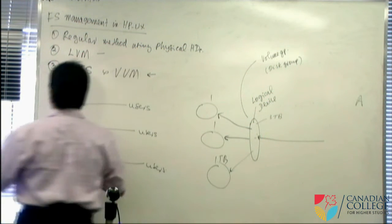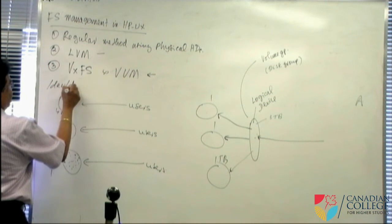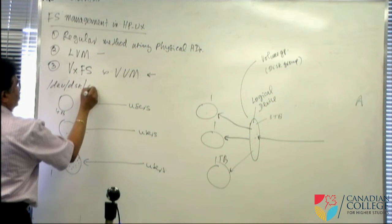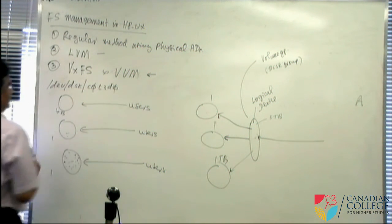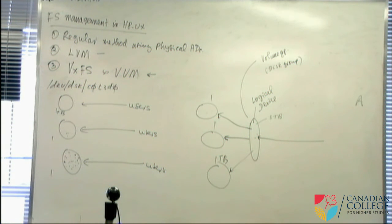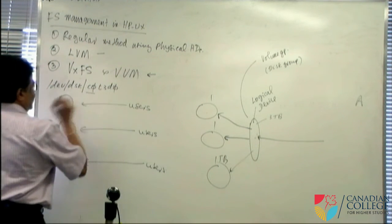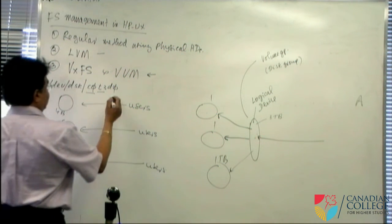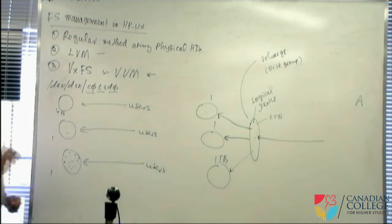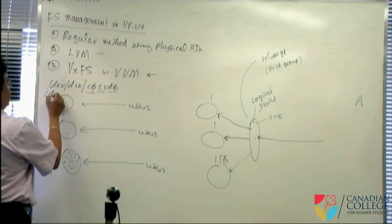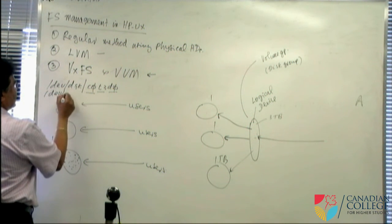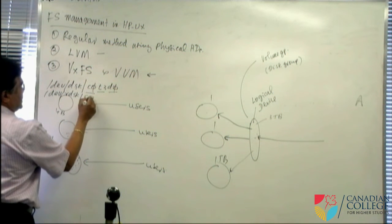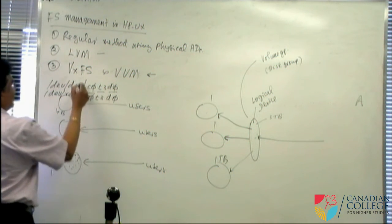Physical hard drives have device names like /dev/dsk/c0t3d0 for block devices, or /dev/rdsk/c0t3d0 for raw devices. In this naming, C0 means controller zero, T3 means target three in SCSI, and D0 is the first disk. Users access these devices directly using these physical names.